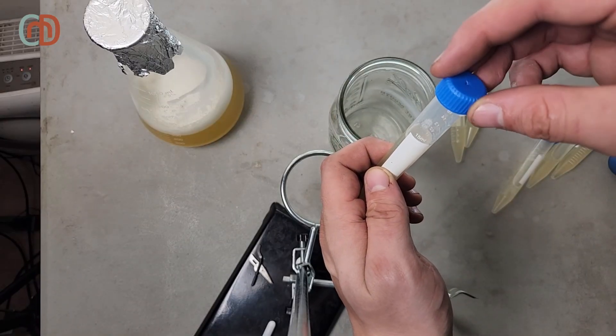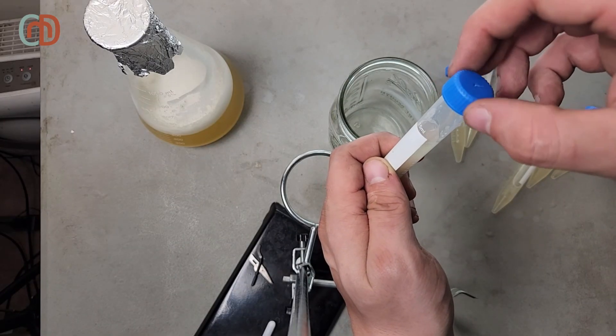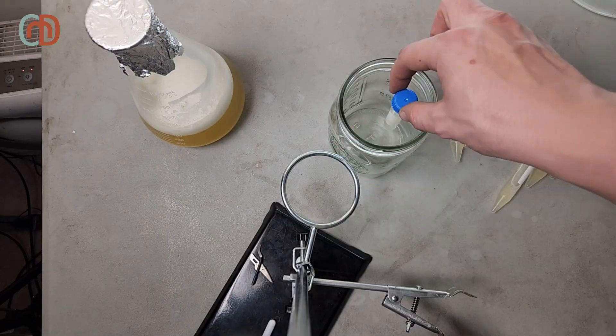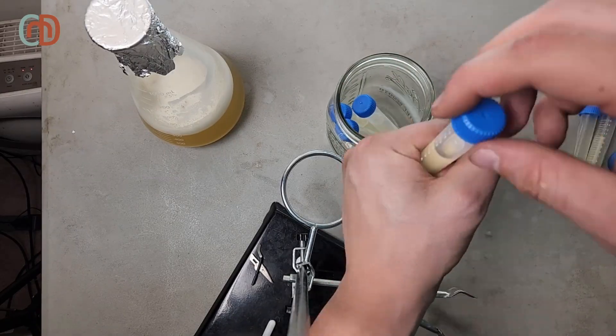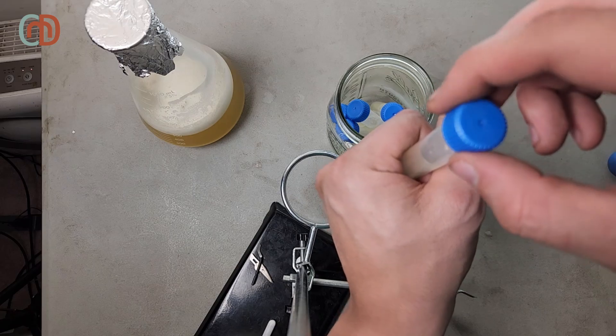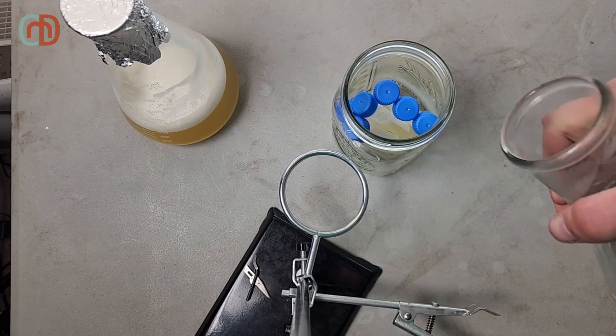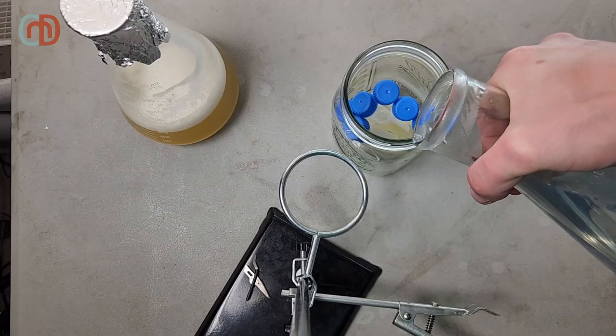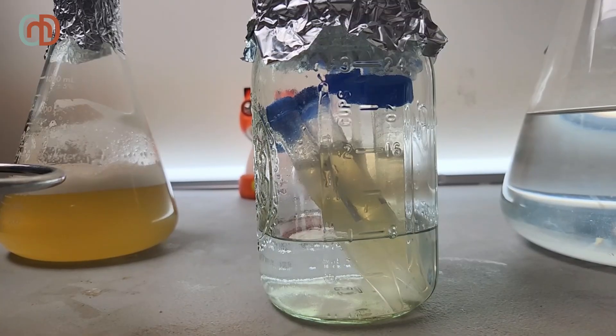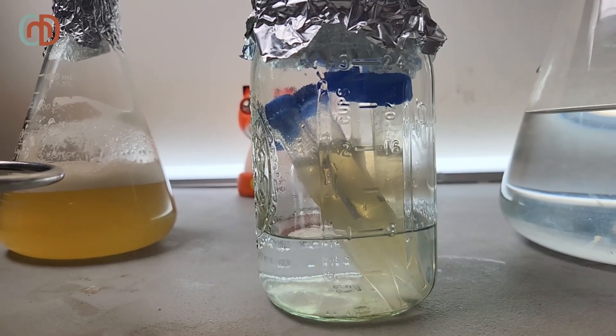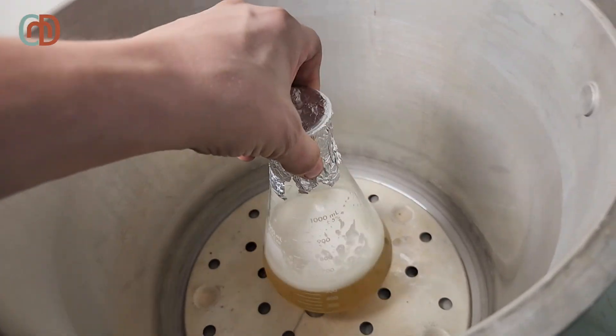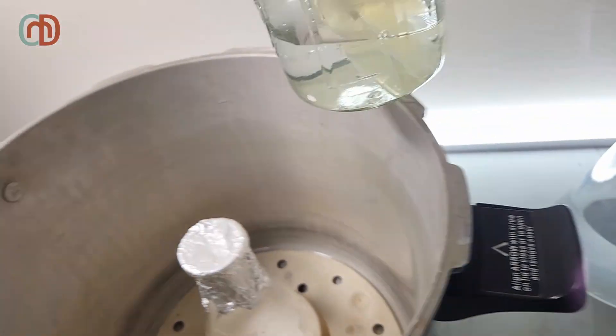Once the vials are filled, I loosen the lids and pressure cook everything to ensure that they're sterile. That's because at this stage, sterility is still very important, as we're trying to isolate single cell colonies. If you don't want to deal with all this sterile procedure, you can buy a yeast packet from a commercial vendor. And that is an effective way to ferment your own alcohol, but I find it a lot more fun to culture and store your own yeast. Just like before, I pressure cook at 15 PSI for 10 to 15 minutes.